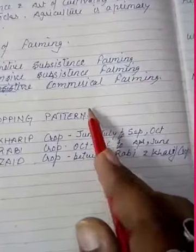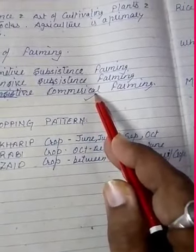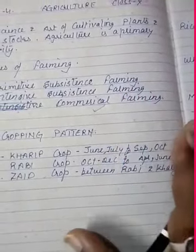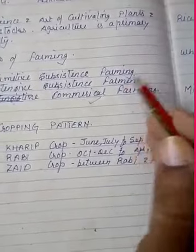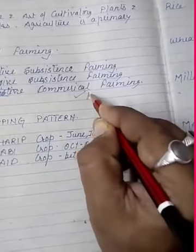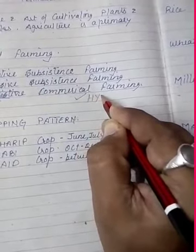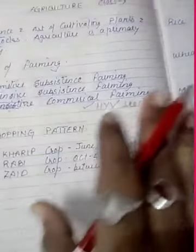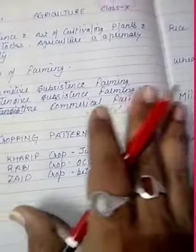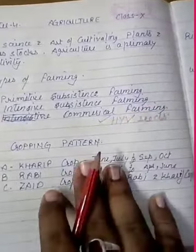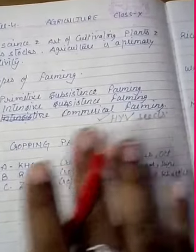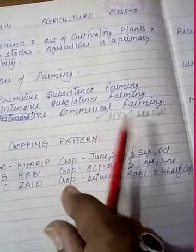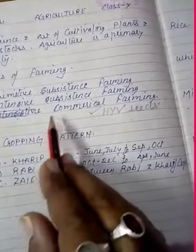The third type of farming is commercial farming. The main feature of this type of farming is the use of higher doses of modern inputs — HYV seeds, chemical fertilizers, and pesticides — in order to obtain higher productivity. The degree of commercialization of agriculture varies from region to region. For example, rice is a commercial crop in Haryana and Punjab, but in Odisha it is a subsistence crop.